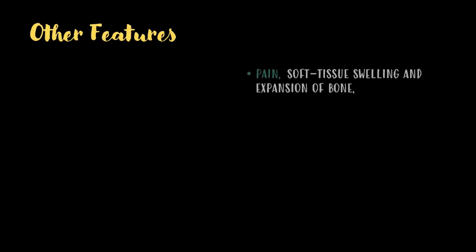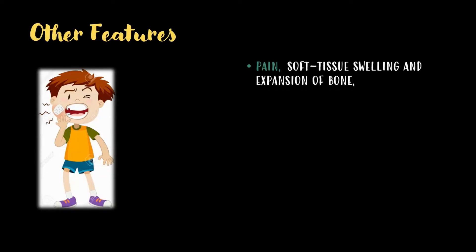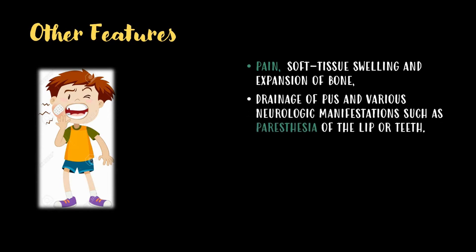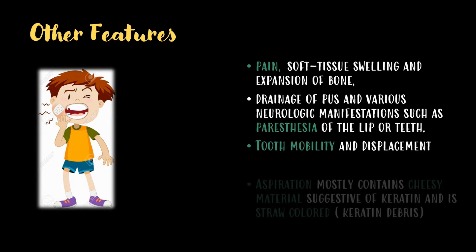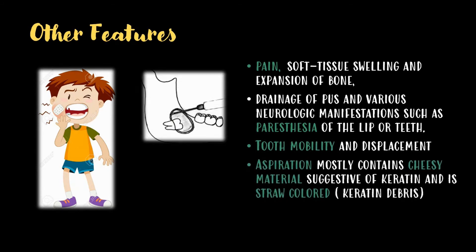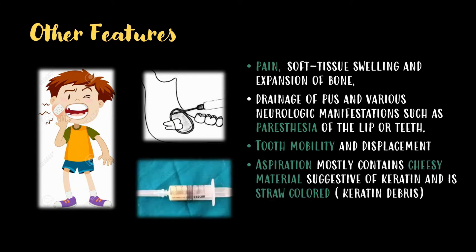Other features include pain, soft tissue swelling and expansion of bone, drainage of pus, and various neurologic manifestations such as paresthesia of the lip or teeth. Tooth mobility and displacement are also noted, and aspiration mostly contains cheesy material suggestive of keratin and is straw-colored due to keratin debris.